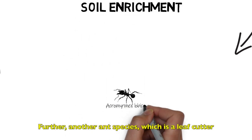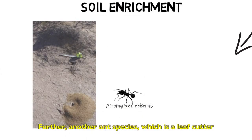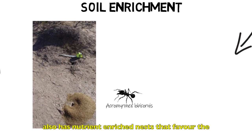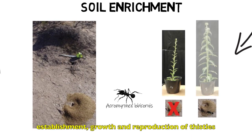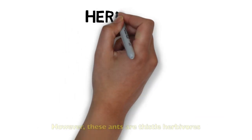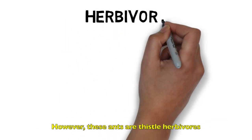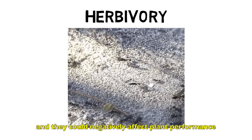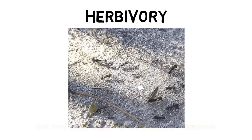Further, another ant species, which is a leaf-cutter, also has nutrient-enriched nests that favor the establishment, growth, and reproduction of thistles. However, these ants are thistle herbivores, and they could negatively affect plant performance.